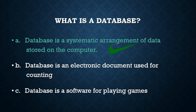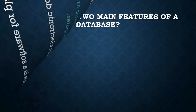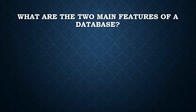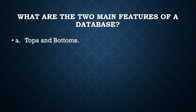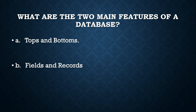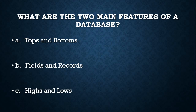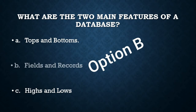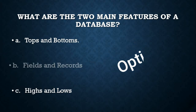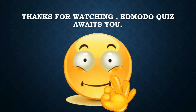Answer the second question: What are the main features of a database? A: Tops and buttons. B: Fields and records. C: Highs and lows. If you chose B, you are correct. Every database consists of fields and records.